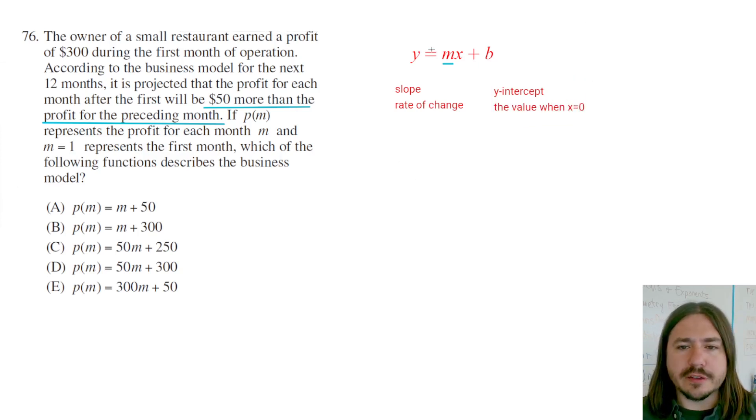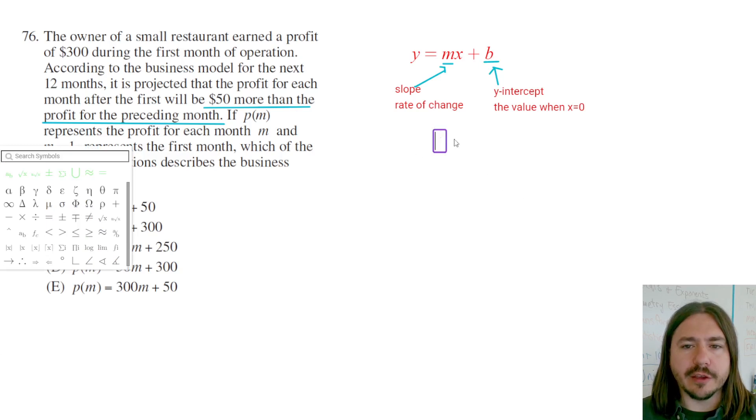So we've got the slope or the rate of change, which is the m value, and the y-intercept, or the value that the function takes on when x is zero. Let's go back and look at our numbers again. $50 more than the profit for the preceding month is our m value, so m equals 50.